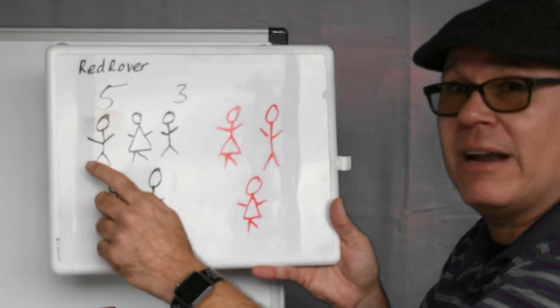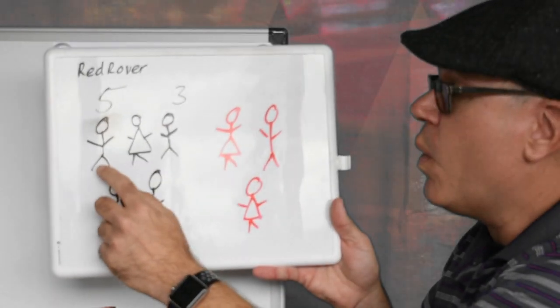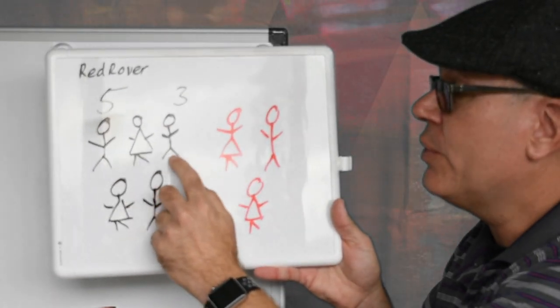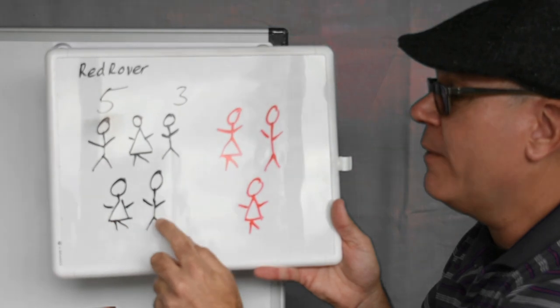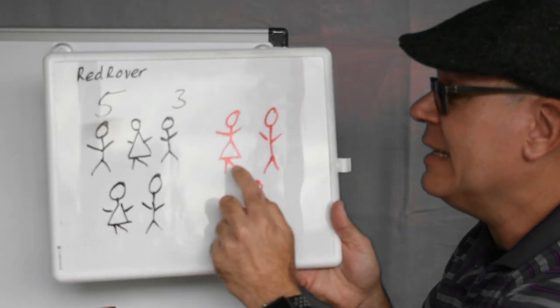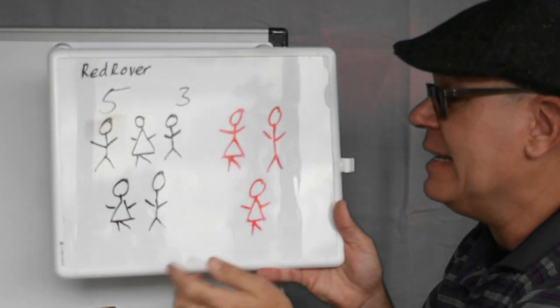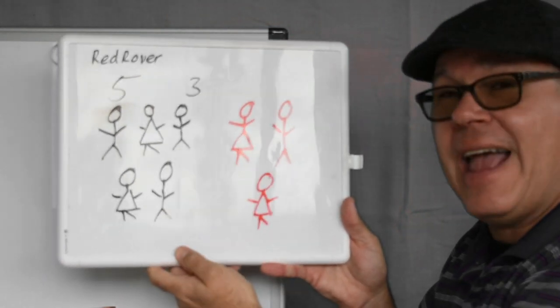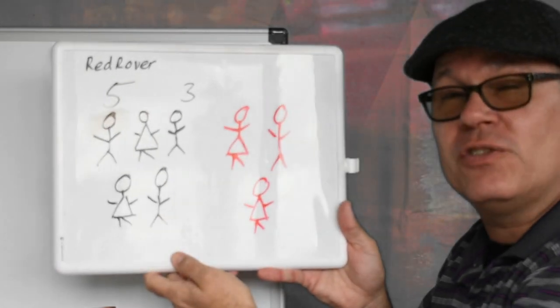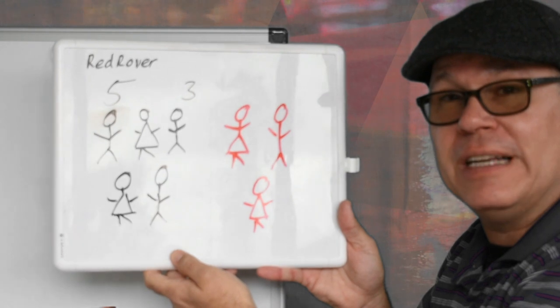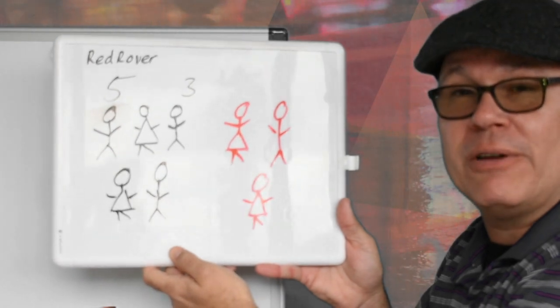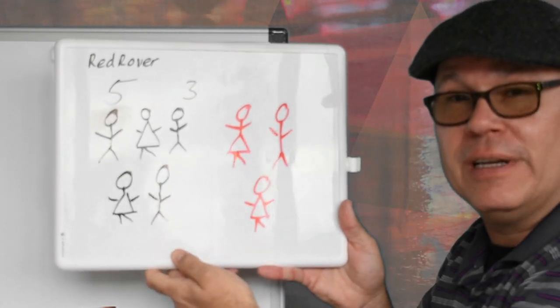Let's count them together to add them all up: one, two, three, four, five, six, seven, eight. Eight! That's the total number of kids that were playing Red Rover.